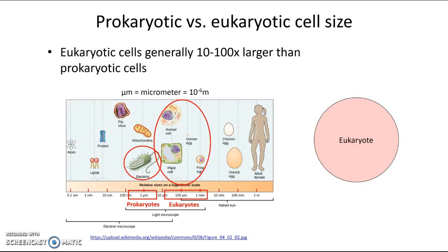Another way to think about it: if you look at a eukaryotic cell under the microscope and it looks about this big, and you were to also look at a prokaryotic cell under the same magnification, it might look about that size relative to the eukaryotic cell. So there is a big size difference that you can see. But whether prokaryotic or eukaryotic, individual cells are almost always very small. Why are you made of billions of tiny little cells rather than just a dozen big ones?